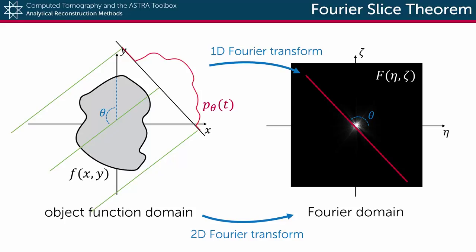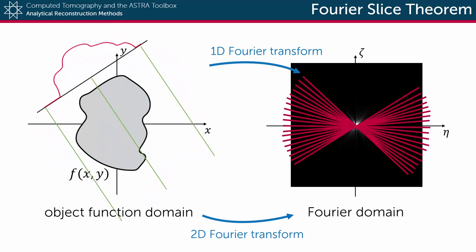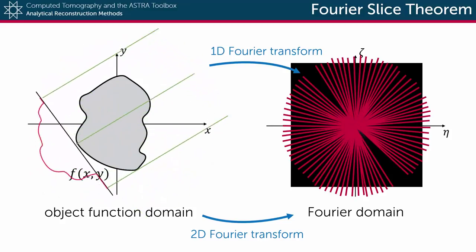By measuring a single projection of an object, we are able to fill in a single line in the Fourier domain. As we then acquire projections from multiple angles, we can essentially construct the full Fourier representation of that object. And once the Fourier domain is fully built, a two-dimensional inverse Fourier transform can be applied on that data to retrieve or reconstruct the original object function.